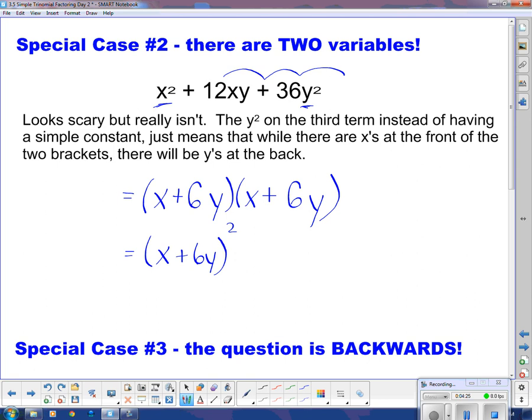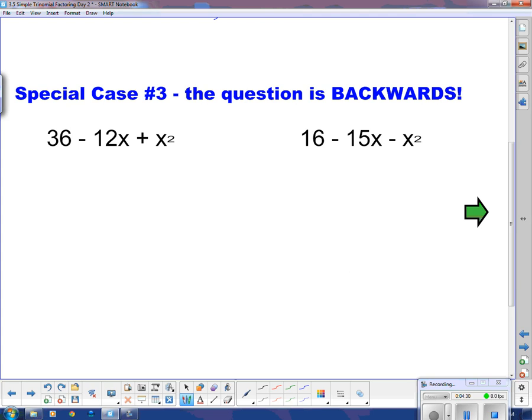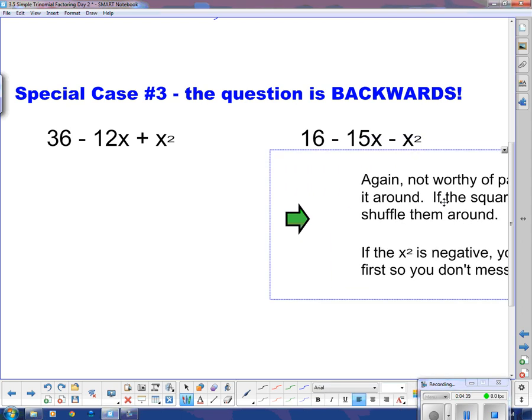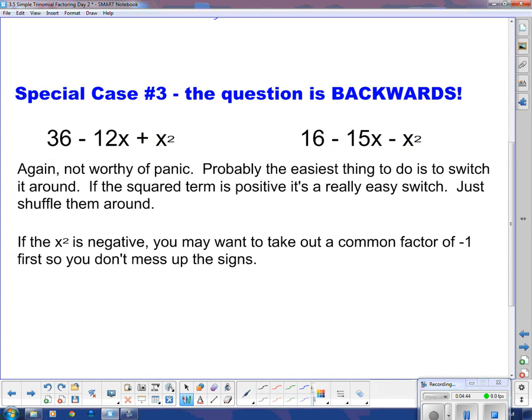Special case number three is what happens if the question is backwards? Our x squareds are at the back instead of at the beginning. Don't panic. It's not worth panicking. Probably the easiest thing to do is to switch it around. If the squared term is positive, it's a really easy switch because you just switch them around. I'm just going to take this x squared and put it out here and take this 36 and put it back here. So we actually get x squared minus 12x plus 36.